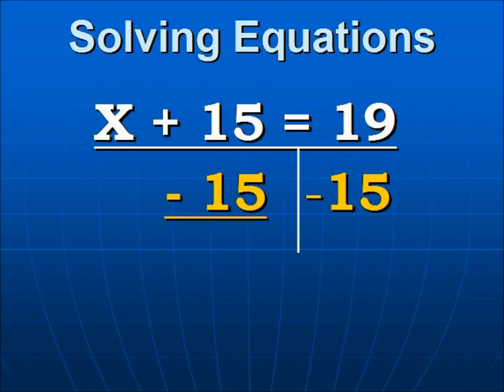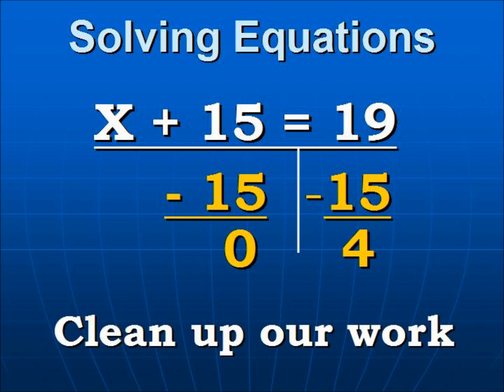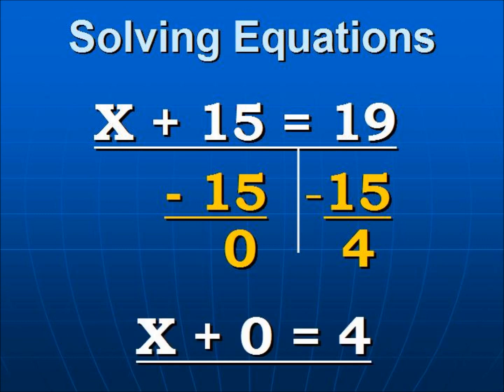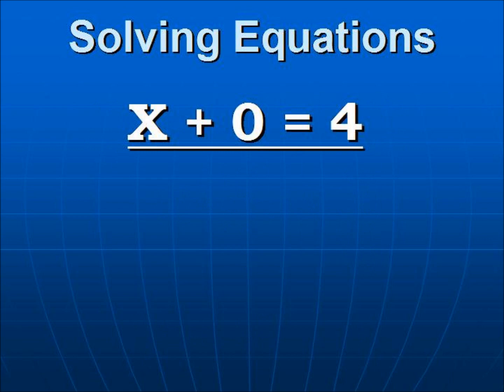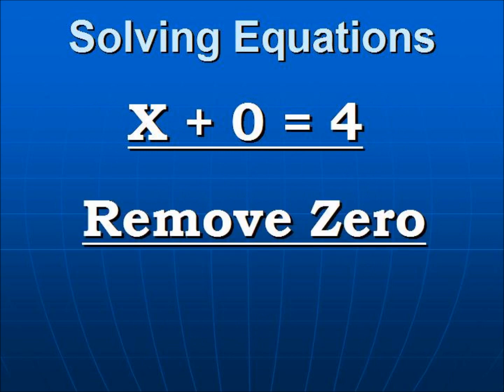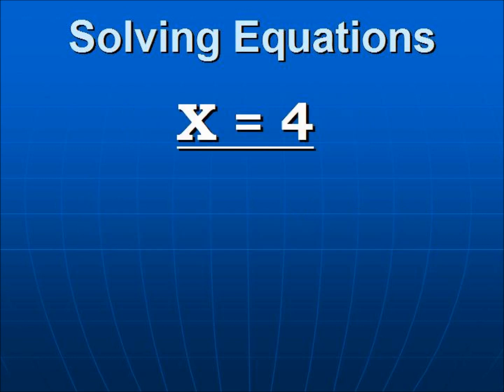Now we're going to do our work. 15 minus 15 is 0 and 19 minus 15 is 4, and we're going to clean up our work. Here we have X plus 0 equals 4. As we clean that up further we just remove the 0 and very simply we have X equals 4. That's our solution.